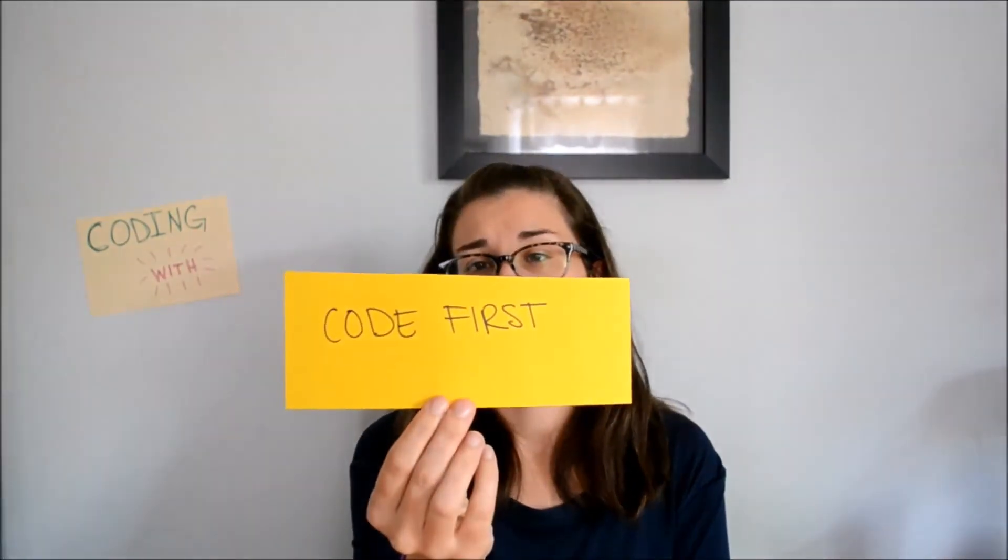And then we have code first. So code first will come up in your tabular list if the diagnosis you are looking for has that notation and it gives you another diagnosis. No matter what, you have to code that code first diagnosis first. This is for sequencing direction, meaning that code first diagnosis code has to come first and then the code that you're currently looking at needs to come second.